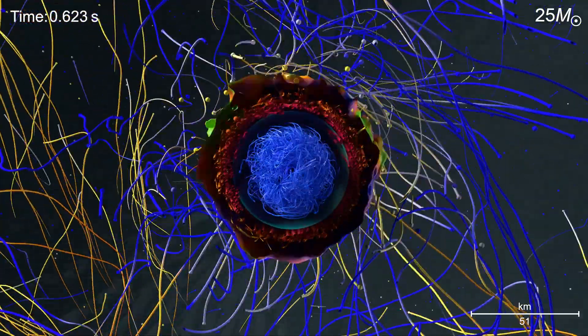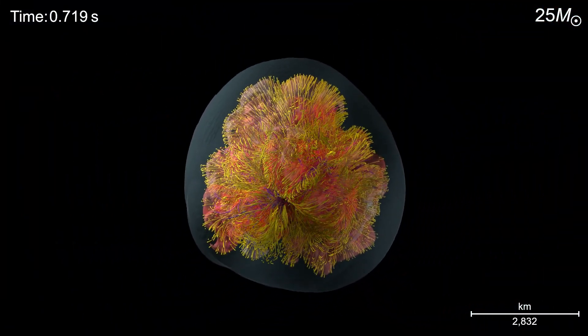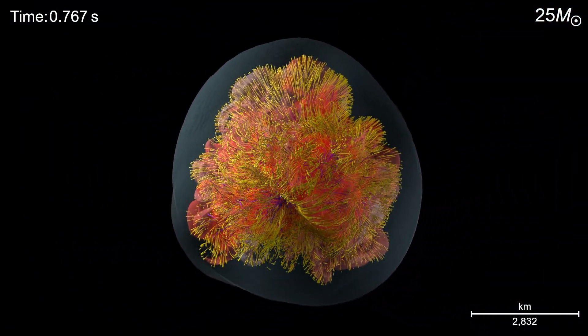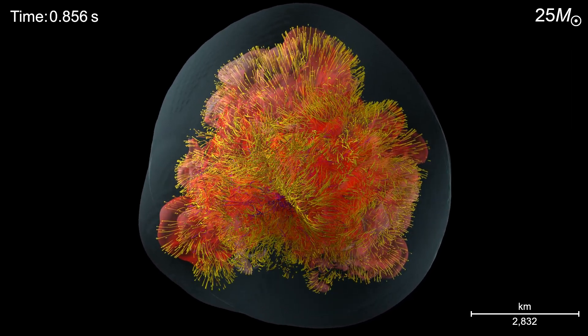We zoom back out through additional layers to again see the expanding shock, which is now a few thousand kilometers across and growing. Interior to that are surfaces and tracers, which map the composition of the material, which is different in different directions.